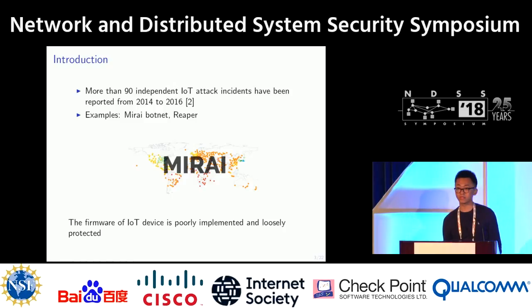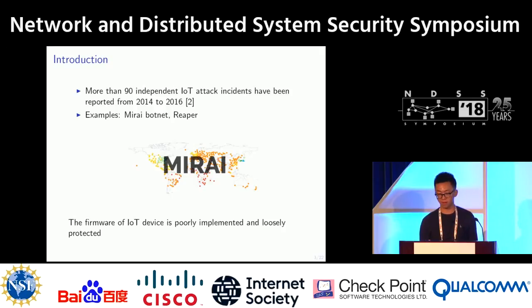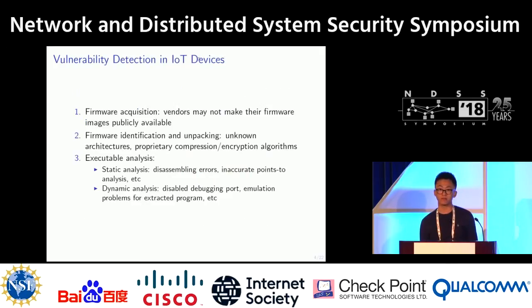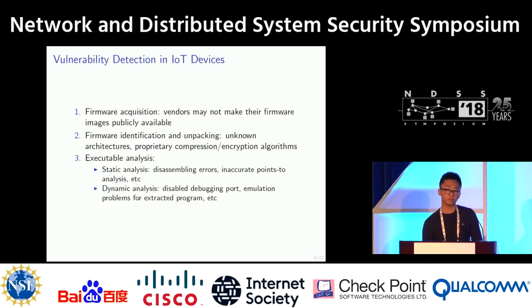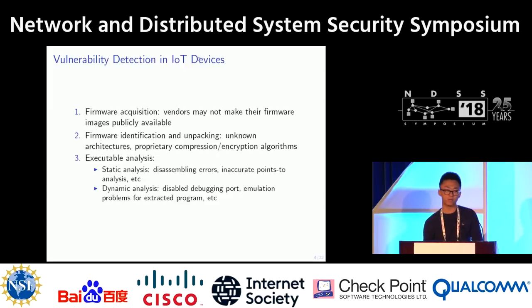How do we systematically discover these vulnerabilities before attackers do? Existing approaches require us to first acquire the firmware, but vendors may not make their firmware images publicly available. Once we obtain the firmware, the next step is to identify and unpack it, but architectures may be unknown, and vendors may use proprietary compression or encryption algorithms.